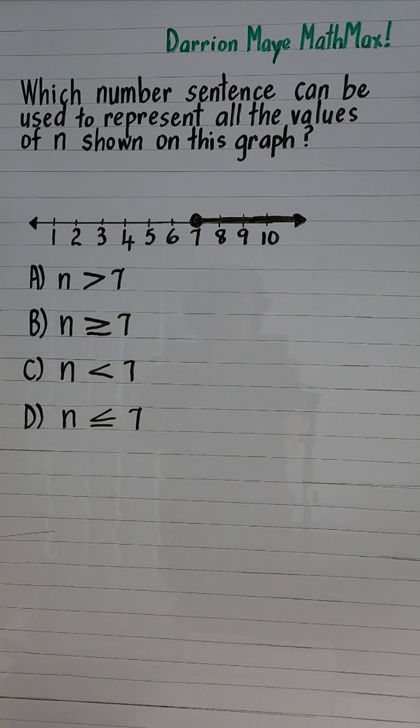So first choice: n is greater than 7? No, because 7 is included. B, n is greater than or equal to 7, and that's our correct answer because C and D are showing less than.